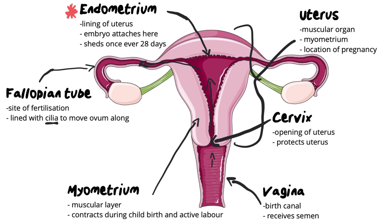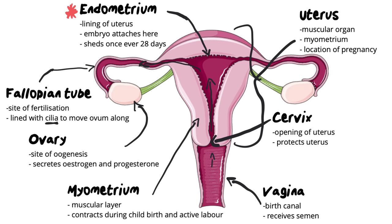The egg comes from the ovary, which is this structure over here. You have two ovaries, one on each side, and you ovulate from each ovary once every month — each ovary takes a turn. The ovary is the site of oogenesis, where eggs are made, and it also secretes estrogen and progesterone — those are its two major functions.